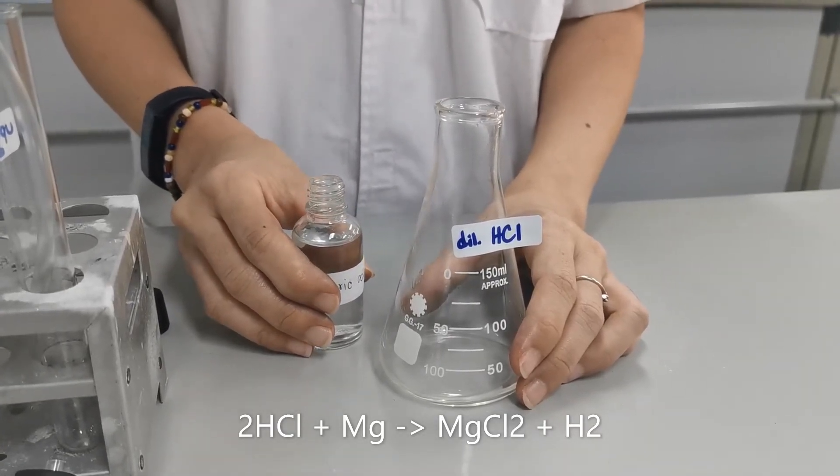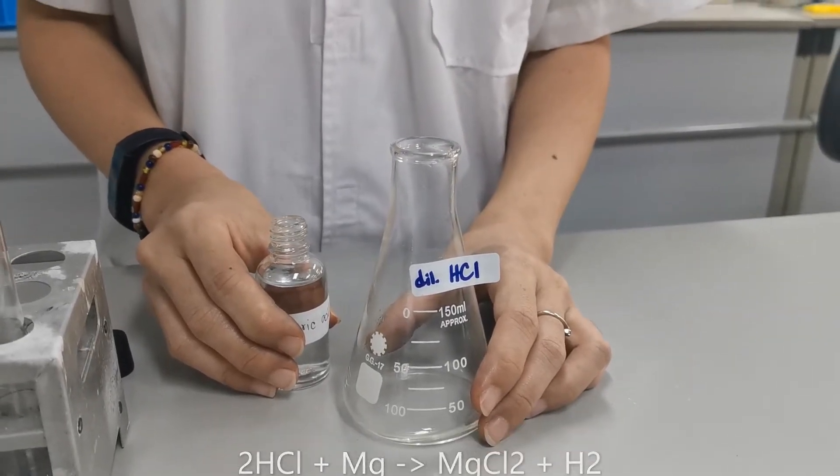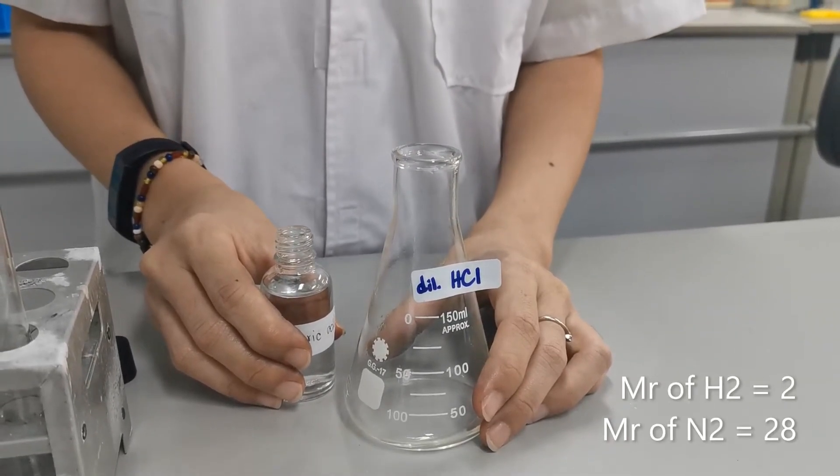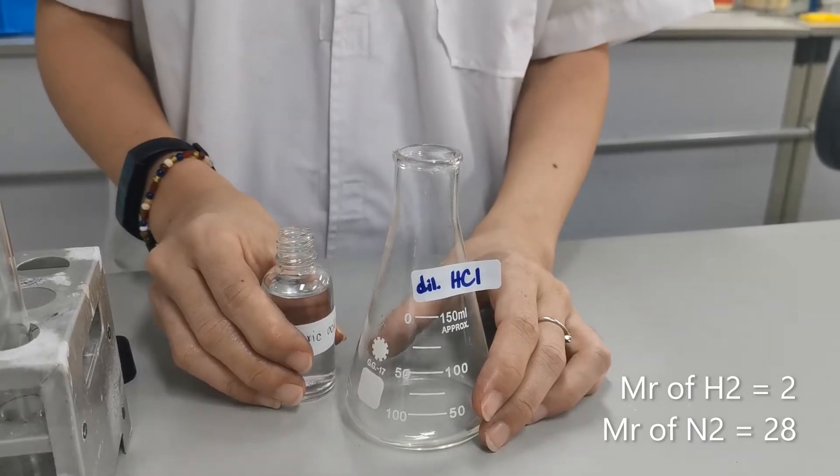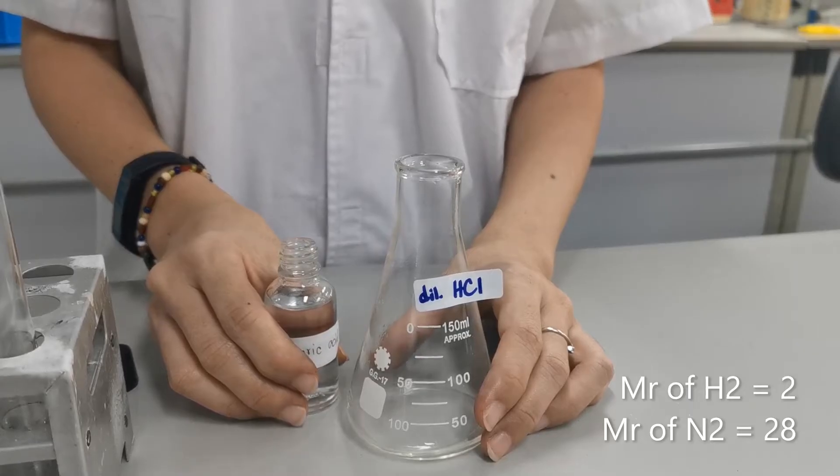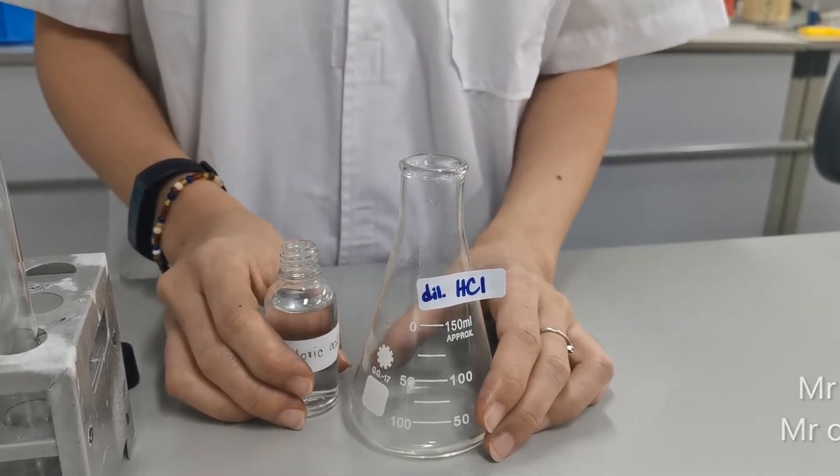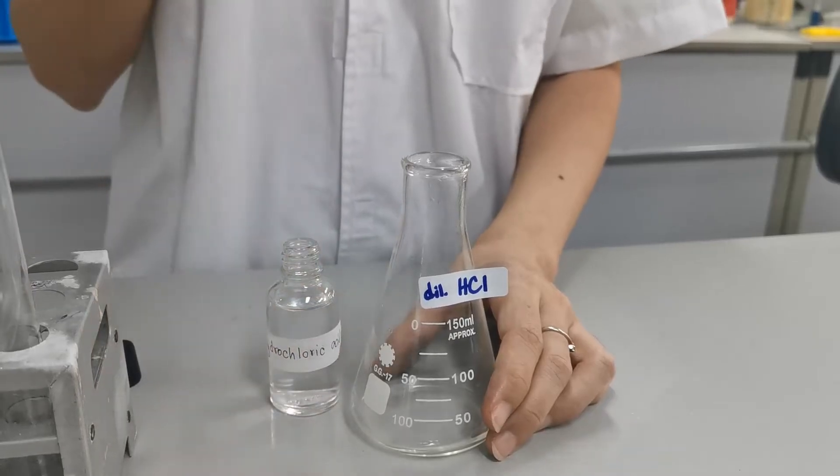Now hydrogen chemical formula is H2 whereas air is composed mainly of nitrogen which is N2. Nitrogen density is much higher than hydrogen density, so we expect that hydrogen gas is going to float in air.